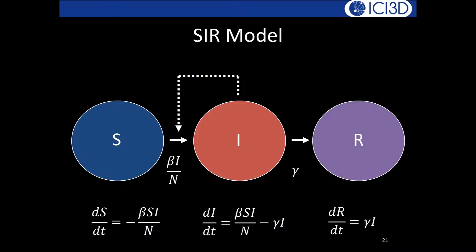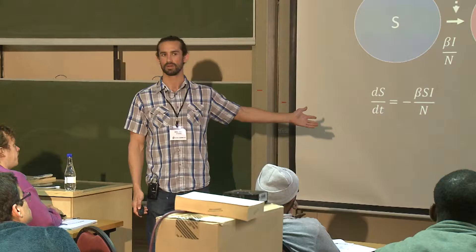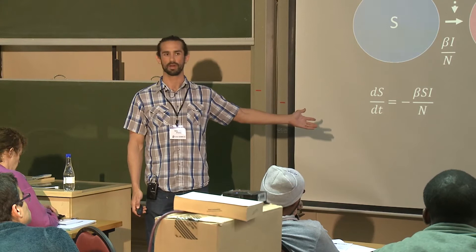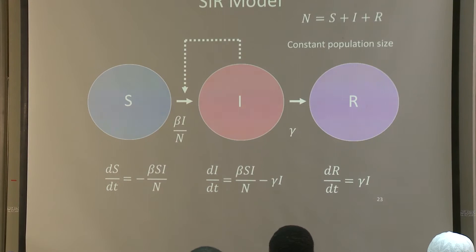N is the sum of S + I + R. Summing the differential equations gives dN/dt = 0, confirming a constant population size. People flow from susceptible to infected to recovered in this simple system.